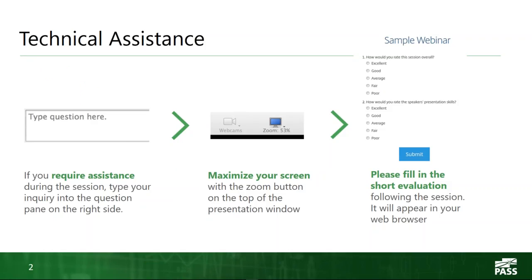If you require technical assistance, please type your question into the question pane located on the right side of your screen and someone will assist you. The question pane is also where you may ask any questions throughout the presentation. You are able to zoom in on the presentation content by using the zoom button located on the top of the presentation window. Please note that there will be a short evaluation at the end of the session — your feedback is important to us, so please take a moment to complete it.